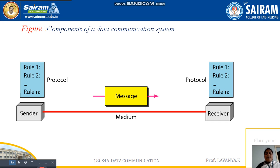Then, message. A message can be information or it should be valuable information or valuable content — that we call it as a message. The fourth one is transmission medium. To communicate from one device to another, we require an interface. The transmission medium acts as an interface device and shows the physical path between the sender and receiver.